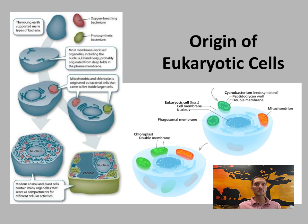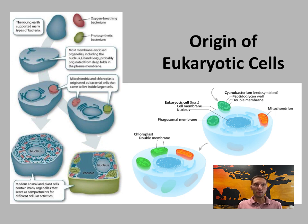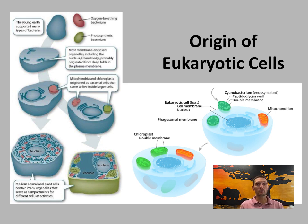We've discussed prokaryotic cells, and now we turn to how eukaryotic cells evolved. This is explained by the endosymbiosis theory. Symbiosis means living in close association with one another, in various forms. A parasitic relationship benefits one organism and harms the other, while a mutualistic relationship benefits both. Eukaryotic cells probably developed through a process called endocytosis.